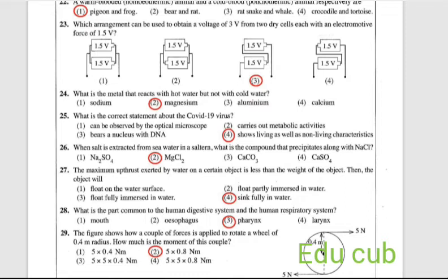In question 25: what is the correct statement about COVID-19 virus? This is regarding the features of virus. Can be observed by optical microscope, it is wrong. We can't observe virus using optical microscope. Carries out metabolic activities, it is wrong. There is a nucleus with DNA, it is wrong. There is no DNA present in virus. Fourth one, shows living as well as non-living characteristics. This is the answer. When a virus is considered, it is showing living and non-living characteristics.